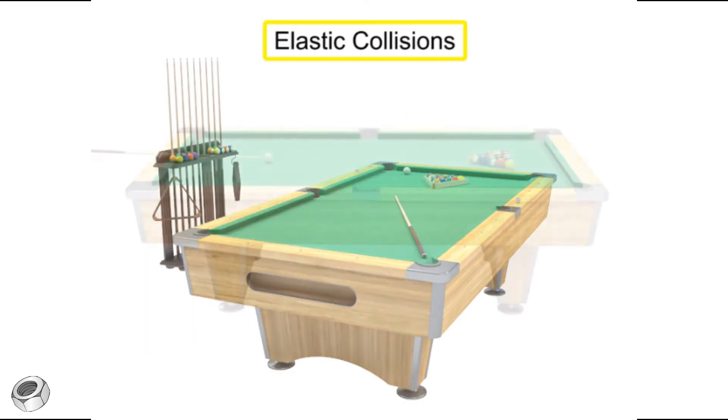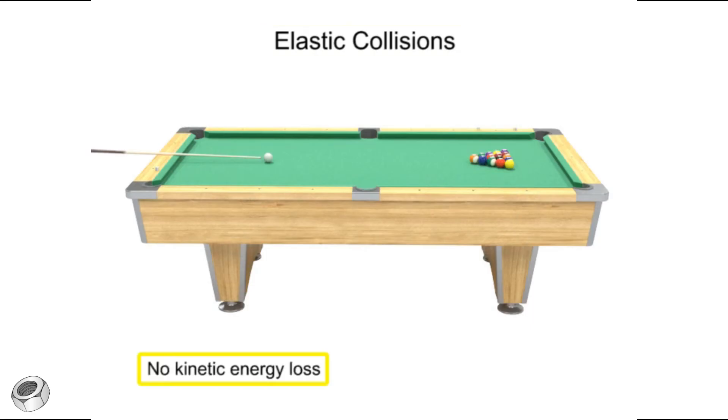An elastic collision is defined as one in which no kinetic energy is lost, no damage is done to the objects involved, and there is no generation of heat.